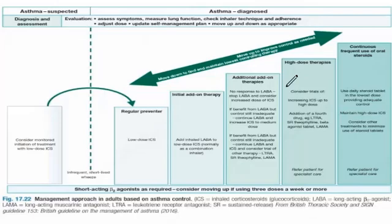Step 3 is add-on therapy: alongside low-dose inhaled corticosteroid, a long-acting beta-2 agonist, leukotriene receptor antagonist, or increased dose of inhaled corticosteroid is added. Step 4: if symptoms remain severe and poorly controlled, high-dose inhaled corticosteroid is used, up to 2000 micrograms daily. Step 5: if still uncontrolled, oral corticosteroids are prescribed. Beyond Step 5, the patient is referred for newer therapies.